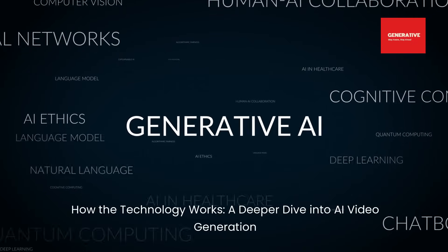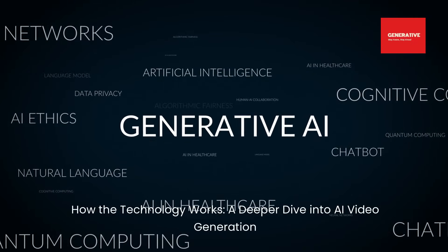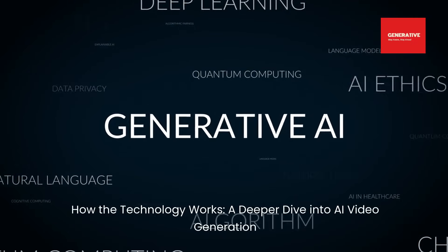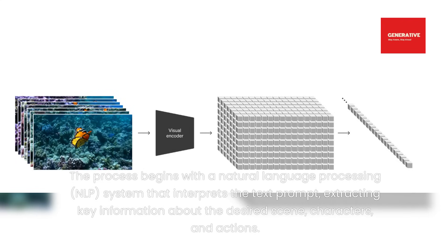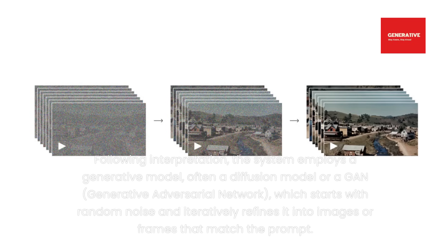How the technology works: a deeper dive into AI video generation. AI video generation fundamentally relies on two key components: understanding the text prompt and generating video content that aligns with the described scenario. The process begins with a natural language processing, NLP, system that interprets the text prompt, extracting key information about the desired scene, characters, and actions.